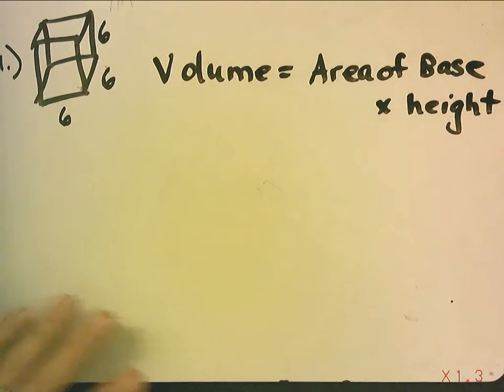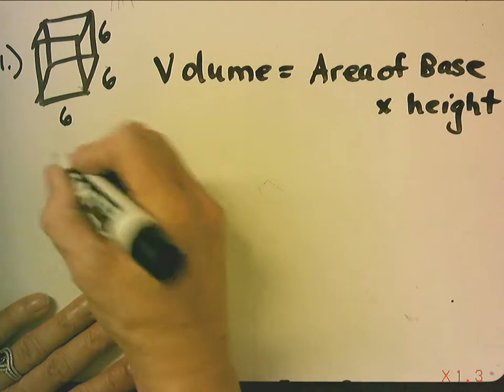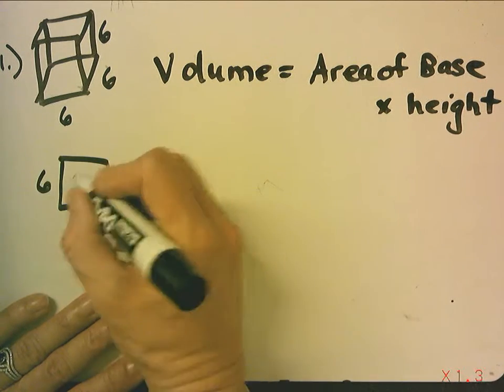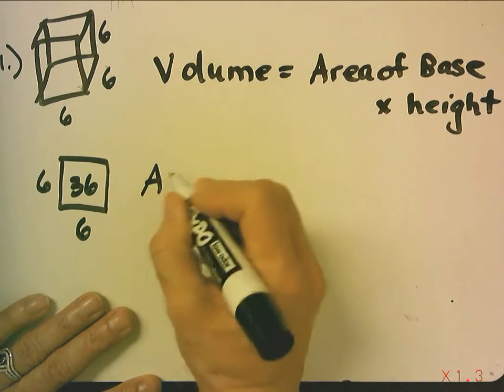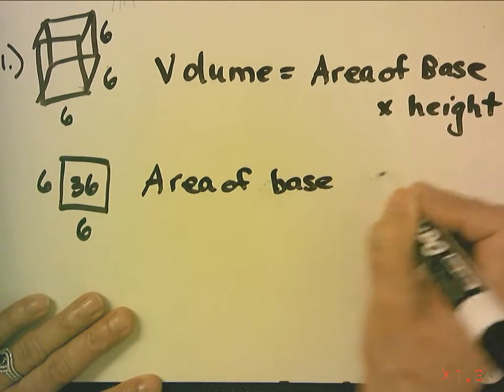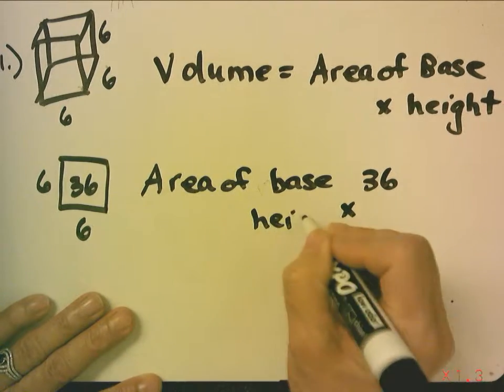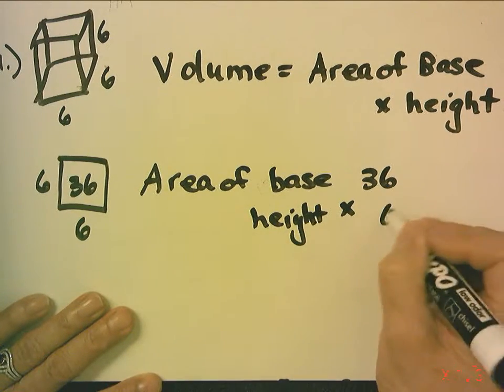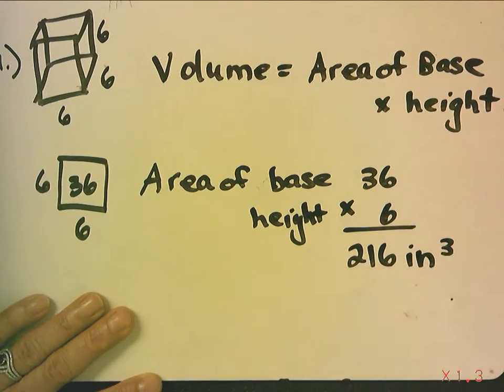Volume equals area of the base times the height. So, this base is 6 by 6, so this area is 36. First, you find area of base, which in this case is 36, and you multiply it by the height, which in this case is 6. So, our answer is 216 inches cubed.